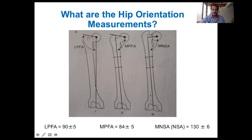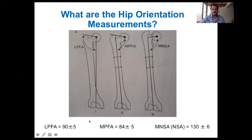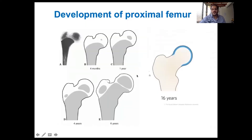We have to identify some hip orientation measurements. The medial proximal femoral angle is the angle between the anatomical axis of the femur and the hip joint orientation line, which is the line from the center of the head to the center of the knee.